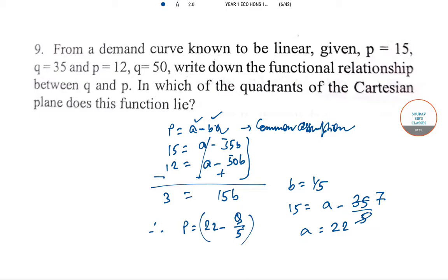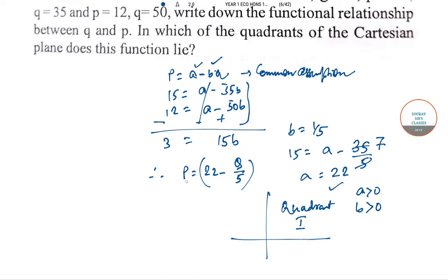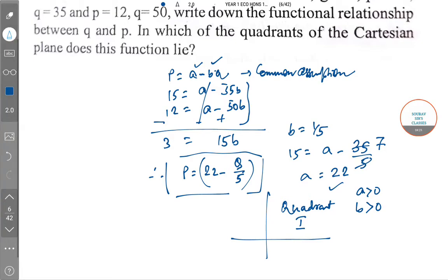In which of the quadrants of the Cartesian plane does the function lie? Since A is positive and B is also positive (though a fraction), the demand curve lies in quadrant 1. This also gives us the equation of the given line.